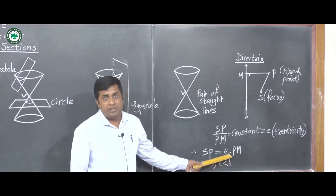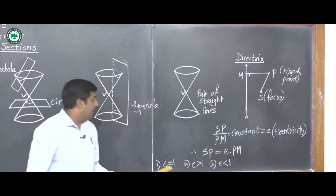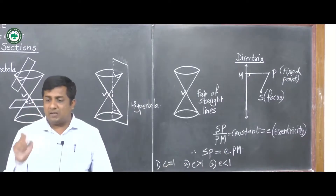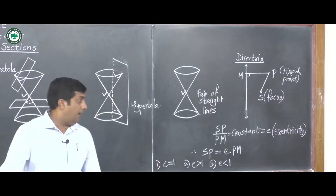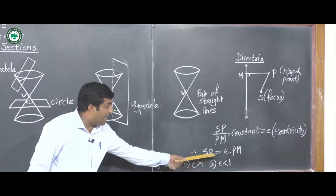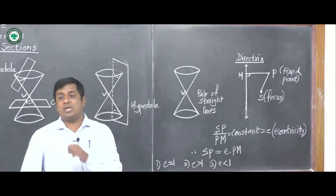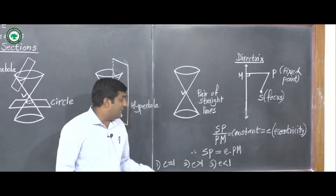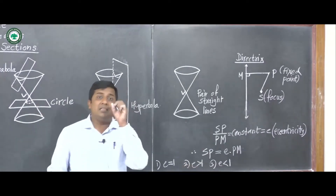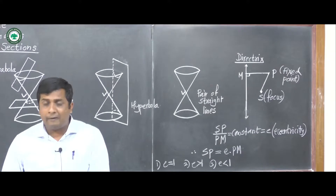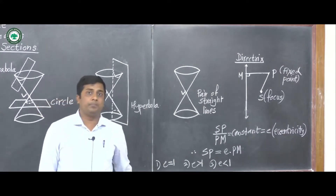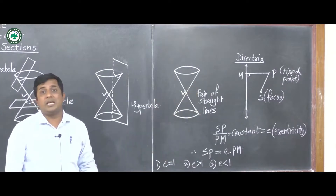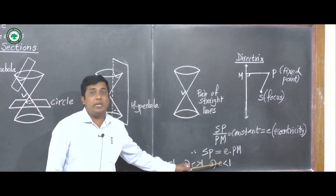And if e is less than 1, the conic section is a hyperbola. So the type of conic is completely determined by the value of the eccentricity e.